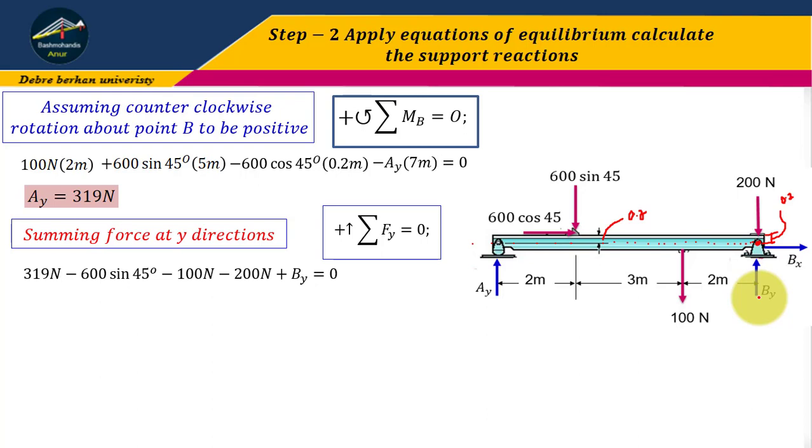Therefore, plus By is positive. Plus By equals to zero. Therefore, By equals to 405 Newtons.